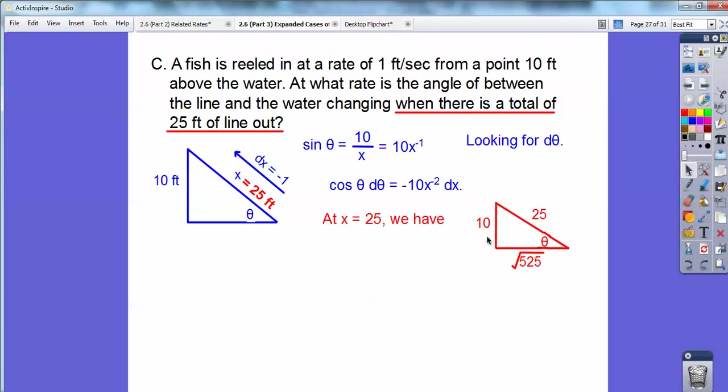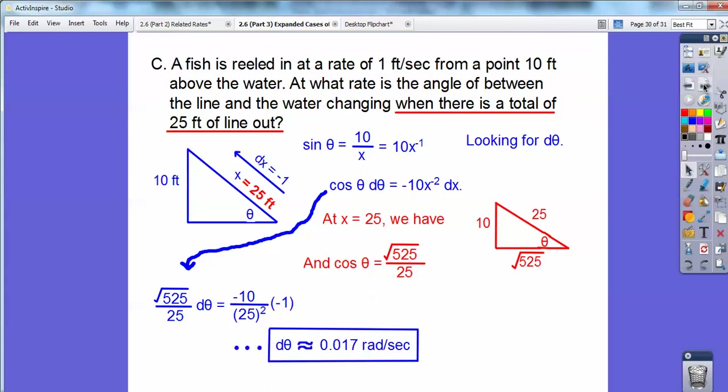Now I have this right triangle and I need the cosine of theta. The cosine of theta is adjacent over hypotenuse, so it's the square root of 525 over 25. This square root of 525 over 25 is going to go right there. Looking for d theta, I know what dx is. It's negative 1, and now I know what x is. It's 25, and I'm going to put this x to the negative 2 on the bottom to make it x to the positive 2. So now it's just number crunching time, so I skipped all that number crunching time, and I got my d theta to be about 0.017 radians per second.